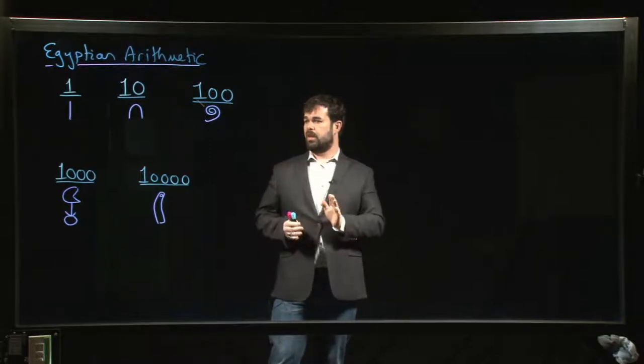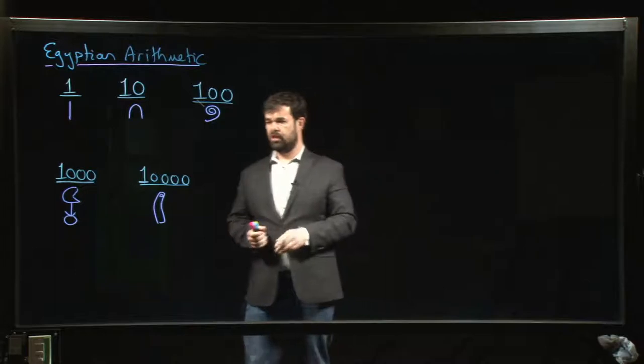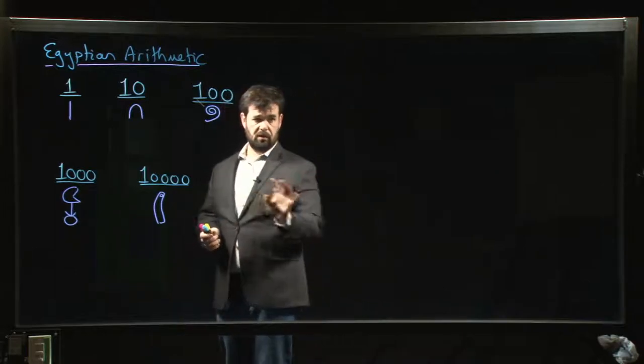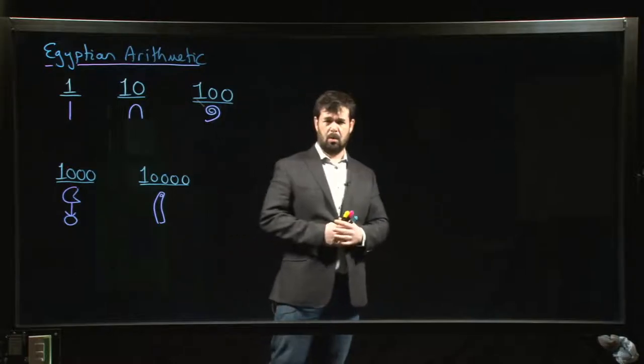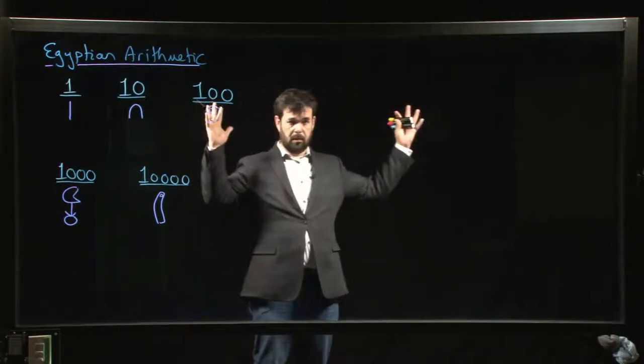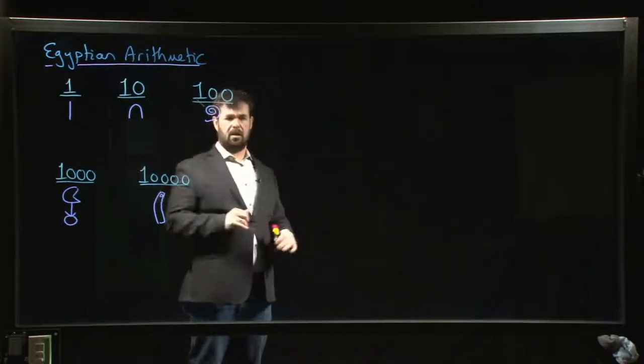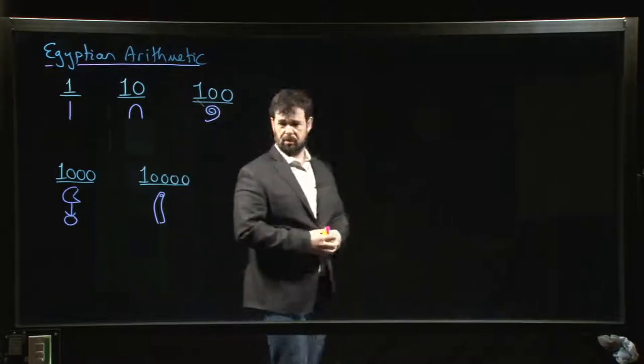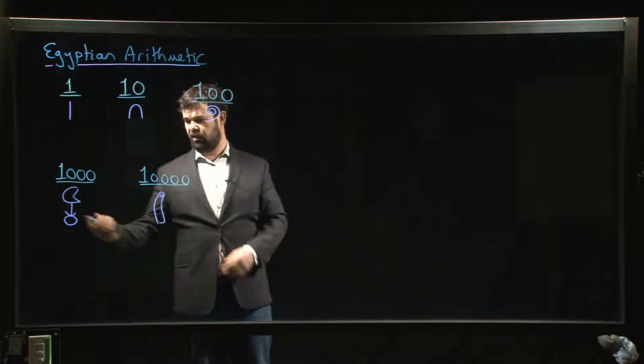I've written down five of the seven symbols. There's two more: one for a hundred thousand, which is a tadpole or a frog, and for a million, it's a god with his arms raised up in the air. We'll probably stick with one, ten, and one hundred because these are the ones I can draw without too much effort.